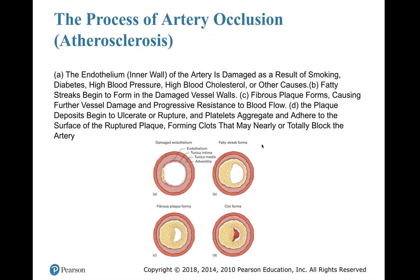The process of artery occlusion is atherosclerosis. Looking at the figure: in A, the endothelium — the inner wall of the artery — is damaged by smoking, diabetes, high blood pressure, high cholesterol, or other causes. In B, fatty streaks form in the damaged vessel walls. In C, fibrous plaque forms causing vessel damage and progressive resistance to blood flow. In D, the plaque deposits ulcerate and rupture — platelets aggregate and adhere to the ruptured plaque, forming clots that may nearly or totally block the artery. That is where we get chest pain and cardiac arrests.